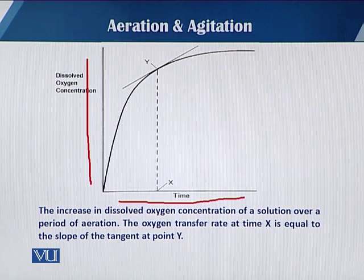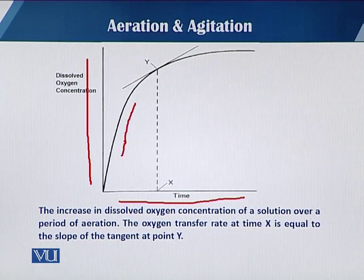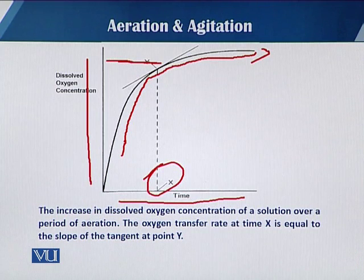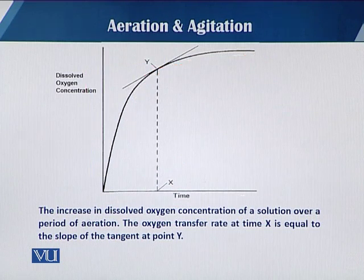When we increase aeration, the dissolved oxygen rises and then reaches a constant level — this point is known as the critical point. The oxygen transfer rate at any point x equals the slope of the tangent at y, where y is the slope of the tangent at 0.8.